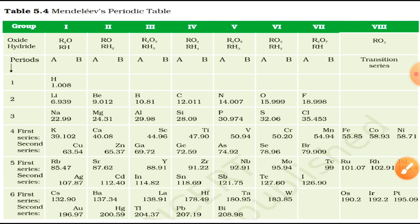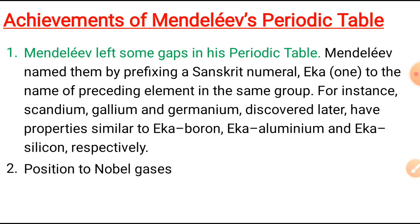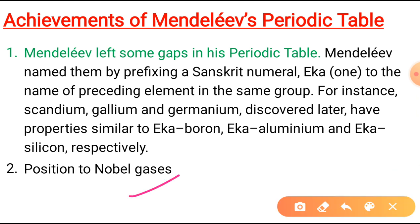Let's discuss the achievements of Mendeleev's periodic table. First, Mendeleev left gaps in his periodic table for undiscovered elements. When these elements were later discovered, they had most of the properties as predicted by Mendeleev. Second, the position of noble gases: noble gases like helium, neon, and argon were discovered very late because they are very inert and present in very low concentrations in the atmosphere. A great strength of Mendeleev's periodic table was that when these noble gases were discovered, they could be placed in a new group without disturbing the existing table.